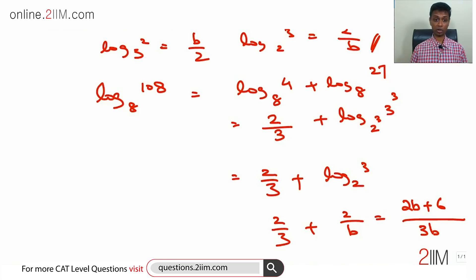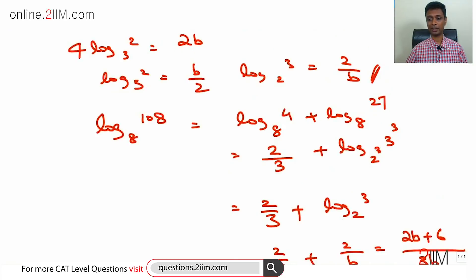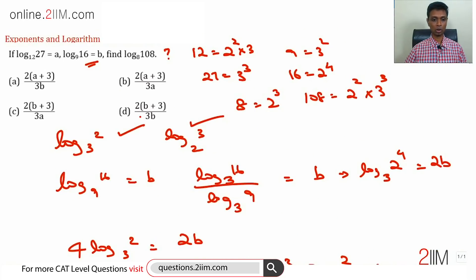Now this might not be among the answer choices, in which case we'll have to simplify using a and b combinations. Let's just check whether this is in the answer choices. 2b plus 6 by 3b. This is the answer, answer choice D, 2b plus 6 by 3b.